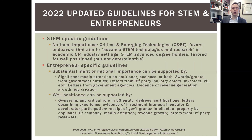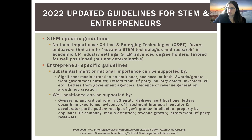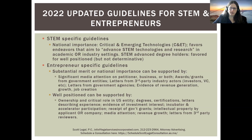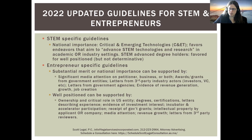Moving on to updated guidelines for STEM and entrepreneurs. This was a very favorable change along the same lines as Matter of Danazar, where the court indicated this category was meant to be interpreted more flexibly and used for entrepreneurs in a way it hadn't been before. The government confirmed through these 2022 policy updates that the national interest waiver is meant to be a more expansive category than it previously was being used for prior to 2016.